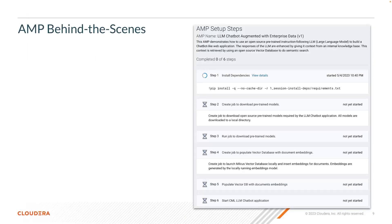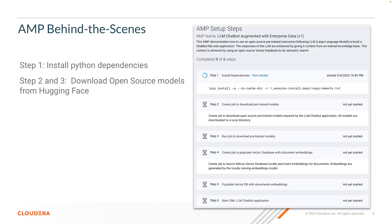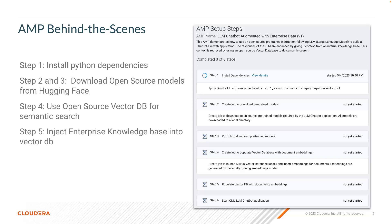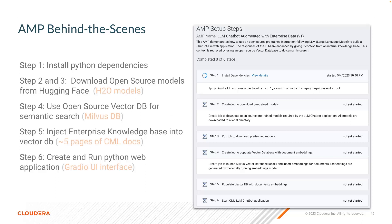So what's happening behind the scenes in this AMP? We install Python dependencies, we download open source models from Hugging Face, we use an open source vector database for semantic search, and we inject our enterprise knowledge base into the vector database. Finally, we create and run a Python web application on top of that. We used H2O models, Milvus DB, about five pages of CML docs, and Gradio for the UI interface.